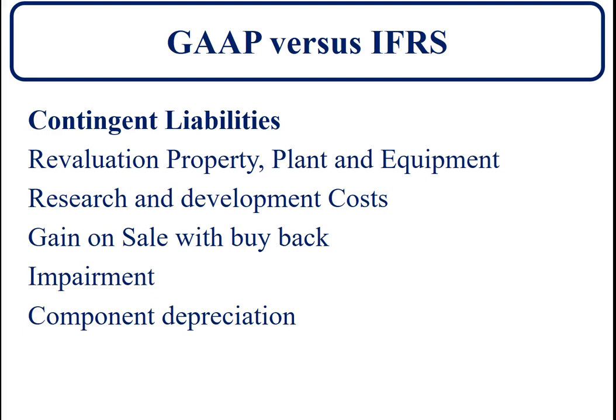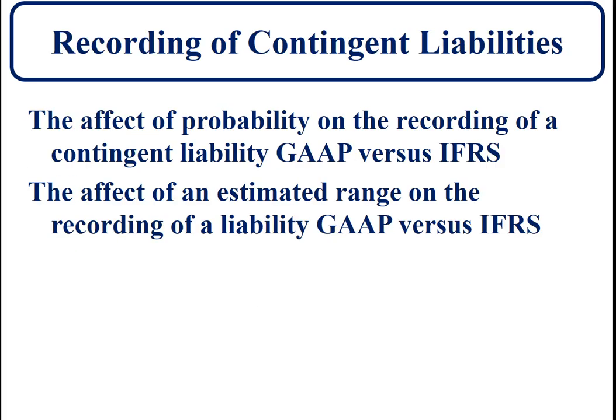In this presentation we will be looking at contingent liabilities and the difference between GAAP versus the international standard. The two areas we'll be looking at are the effects of probability on whether a contingent liability is recorded under GAAP versus the international standard, because they're different, and the effects on an estimated range — and what is recorded — again the differences between what GAAP requires and what the international standard requires.